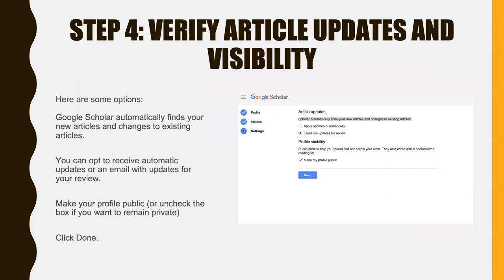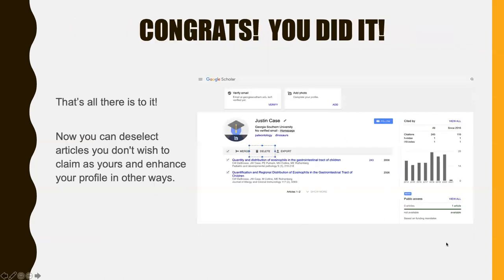Finally, you have some options to select whether article updates are sent to you and to set the visibility of your profile. Google Scholar can automatically find your new articles and changes to existing ones and update your profile automatically, or you can opt to receive an email with updates for your review. You can make your profile public — that's the default — or just uncheck the box if you want it to remain private. Then click Done. And that's really all there is to it — you've created a basic profile.